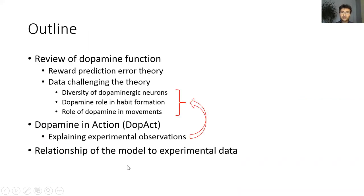In the first part of the talk I will review dopamine function. I will start with a few words on reward prediction error theory of dopamine, which Stephen has already introduced, and then present a few pieces of data which are inconsistent with a basic form of this theory. In particular I will talk about diversity of dopaminergic neurons, the role of dopamine in habit formation and in movements. Then in the second part I will suggest a framework extending reinforcement learning theory of dopamine to describe its role in action planning, which I will refer to as DOPACT.